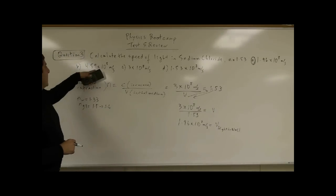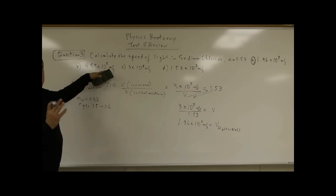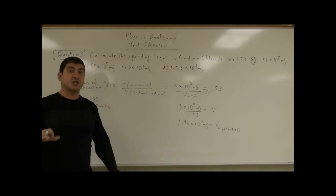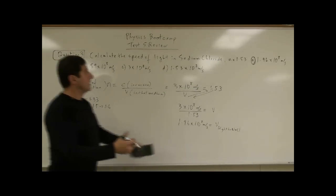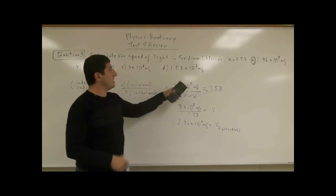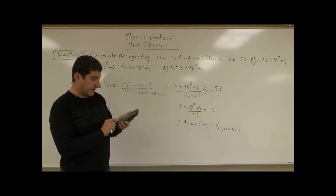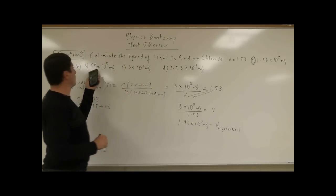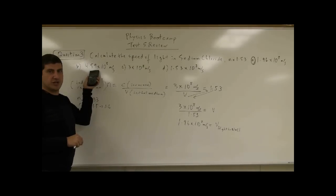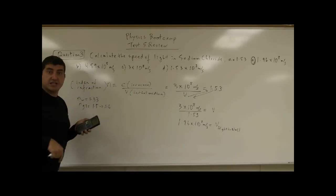The 4.59 times 10 to the 8 is put there on purpose because if you had thought that the velocity of light increases in the medium, you might have multiplied, you might have done 3 times 1.53, you would have gotten 4.59. So it's put there on purpose if someone thinks that the velocity of light increases.